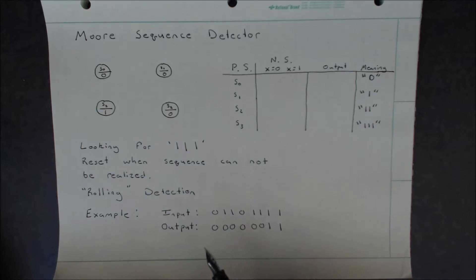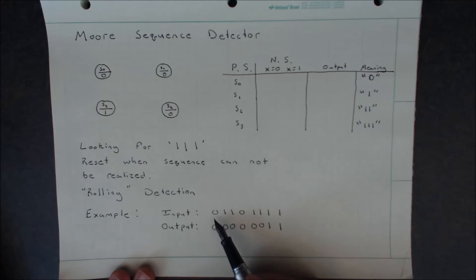If we look at this example input, if we receive 0, we haven't received 111, and then we receive two 1s in a row and then a 0, we still have yet to receive 111, so we will never output a 1.